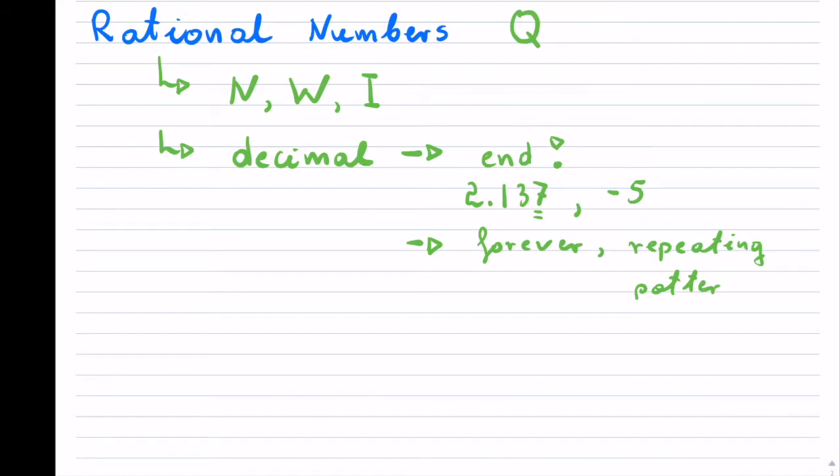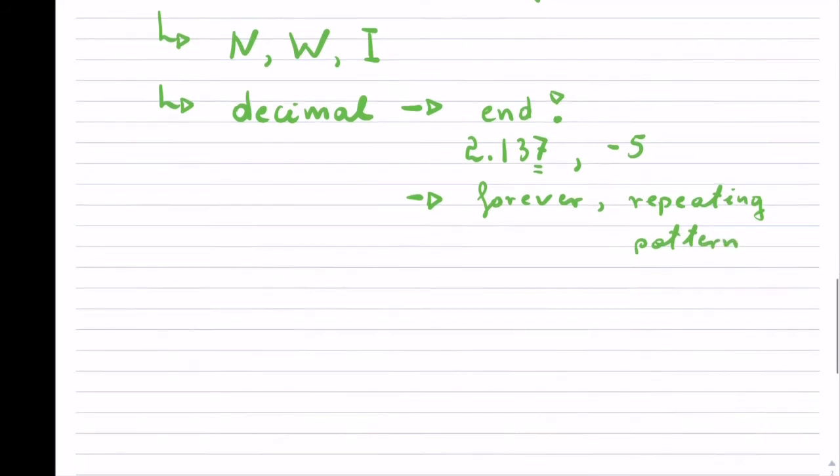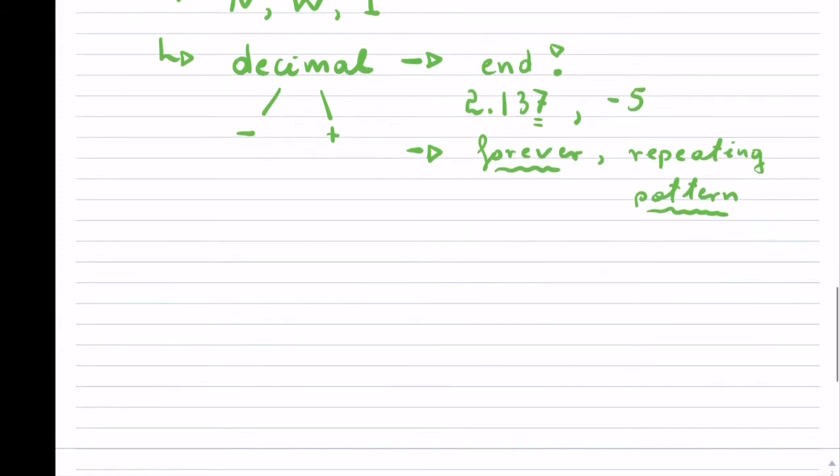Notice the other thing that these can be both positive or negative. This can be a negative number and it can also be a positive number. What are some examples of these numbers that go on forever and have a repeating pattern?